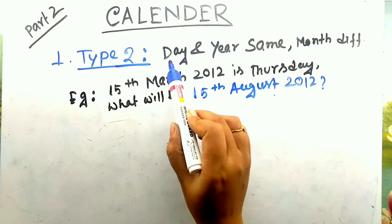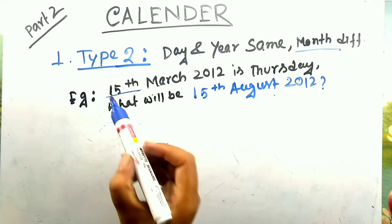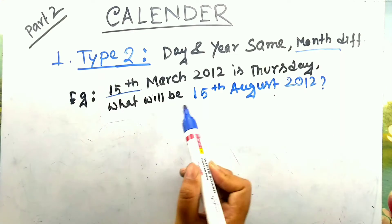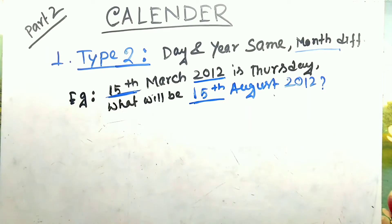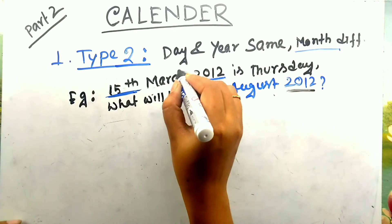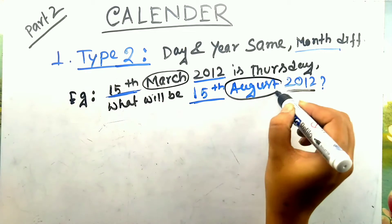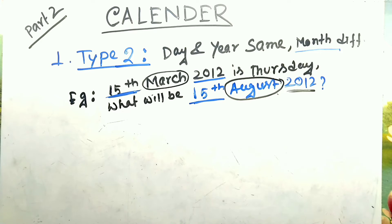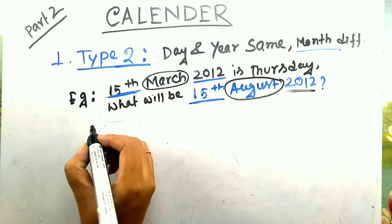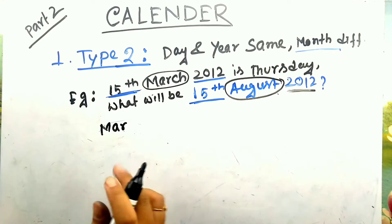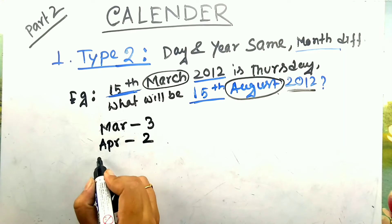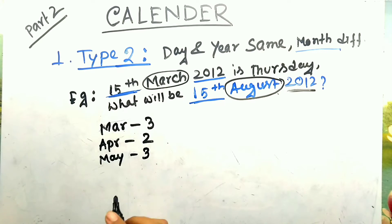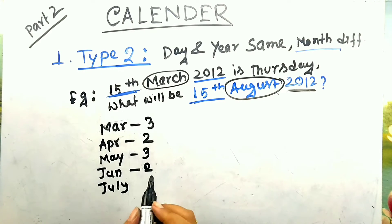The second type is when your day and year are the same but the month is different. Look at the question: 15th March 2012 is Thursday. What will be the day on 15th August 2012? The date (15th) and year (2012) are both the same, but the months differ — March versus August. You need to calculate the odd days from March to July (not including August). March has 3 odd days, April has 2, May has 3, June has 2, and July has 3.